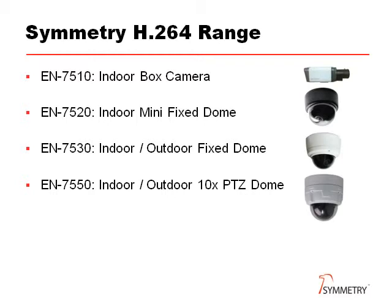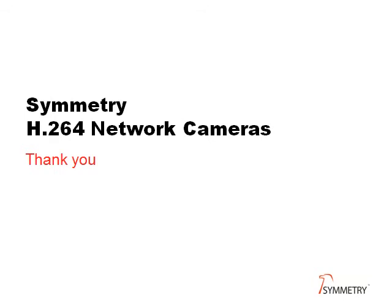In conclusion, the range gives us two indoor cameras — one box and one low-cost mini fixed dome — and two cameras suitable for indoor and outdoor use: a fixed dome and a pan tilt zoom. They all use H.264 encoding and have intelligent detection as standard, with most having analytics available as an option. All are fully integrated into Symmetry video management software. Thank you for listening to this webinar on the Symmetry range of H.264 network cameras.